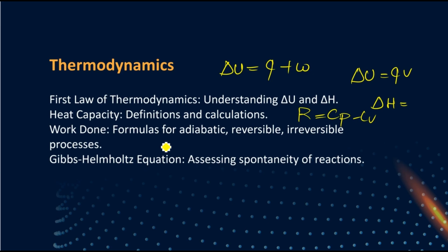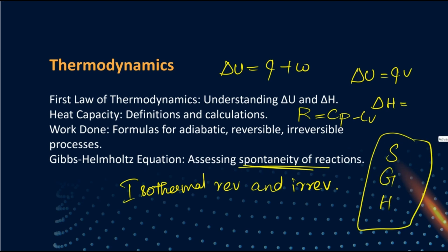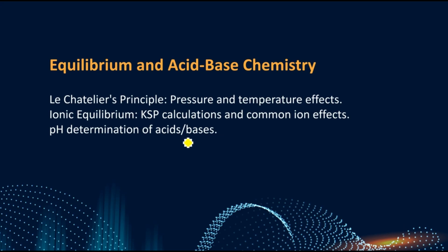Heat capacity Cp, Cv calculations, how it is related - R equals Cp minus Cv. Then degrees of freedom for linear and non-linear state and path functions. In case of work, then the formulas related to adiabatic reversible and irreversible processes, the most importantly isothermal reversible and irreversible processes you have to concentrate on. Then Gibbs-Helmholtz equation - concentrate on the spontaneity of the reactions. Spontaneity of S, G, and H, these three are super important.